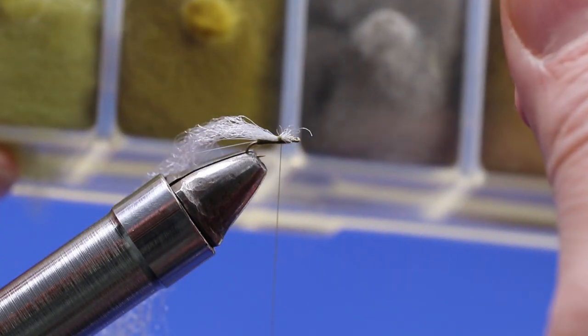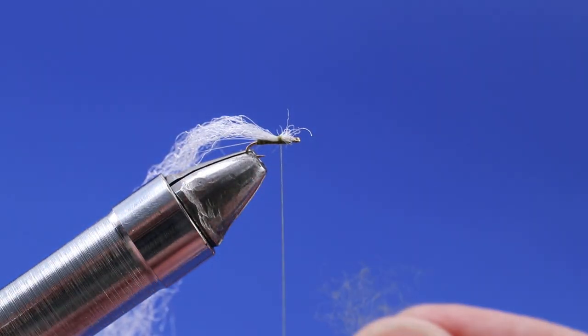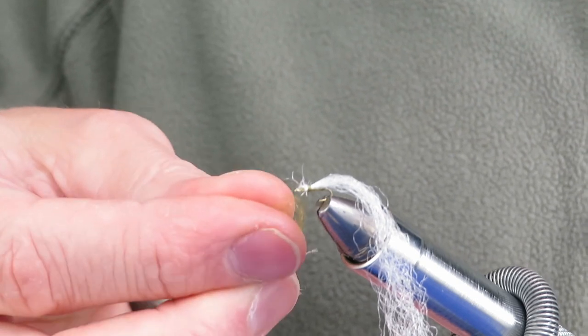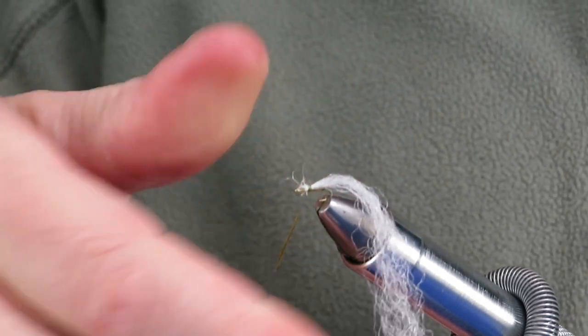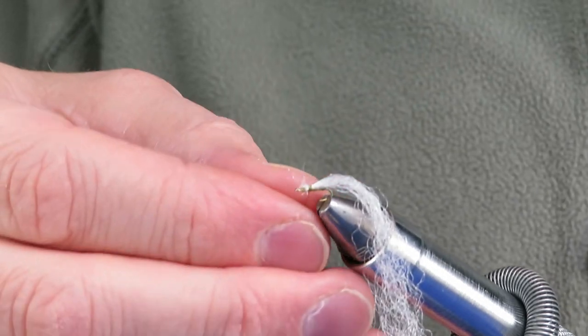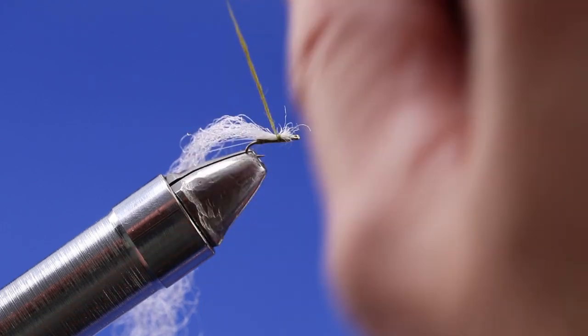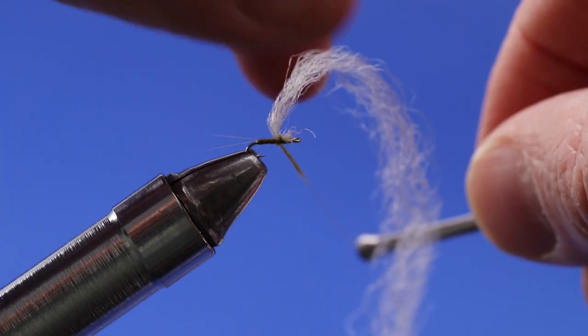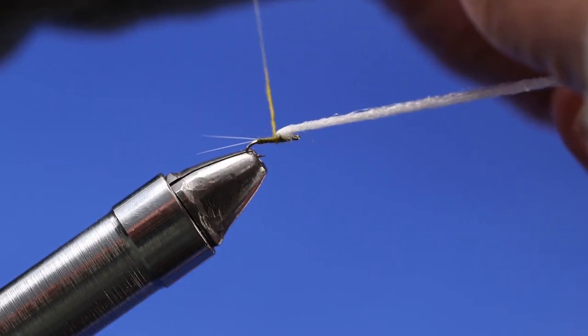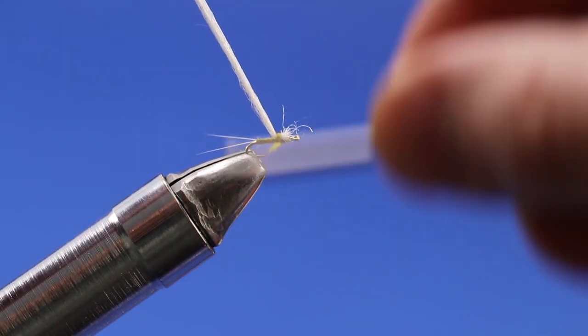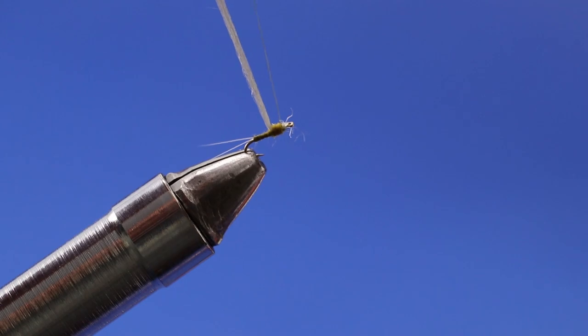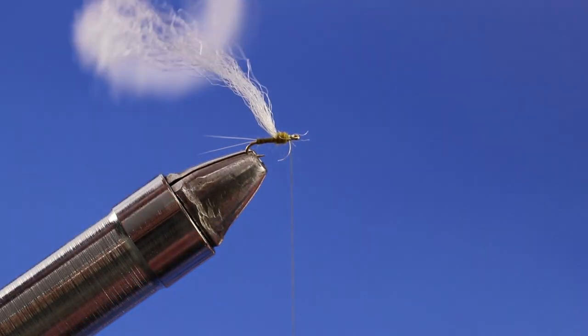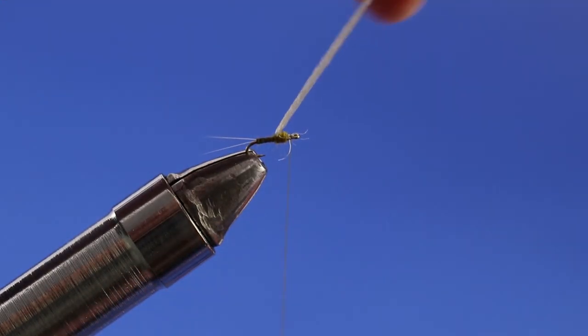Grab a little bit more dubbing, just enough to cover over the post material as I tie it forward. Make my dubbing noodle again, push it up. I'm going to hold my wing kind of up and forward a little bit, maybe put two wraps behind before I go ahead and finish it off going forward. Just like that. Giving it a wrap or two behind just helps it stand up a little bit straighter.